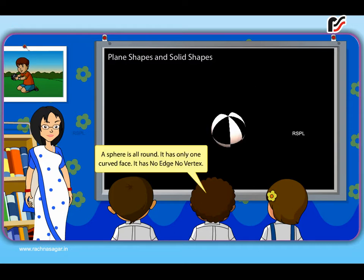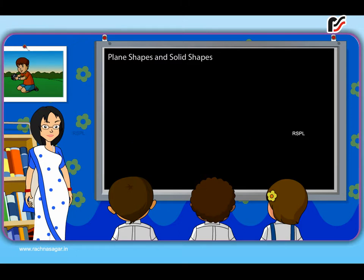A sphere is all round. It has only one curved face. It has no edge, no vertex. Excellent!